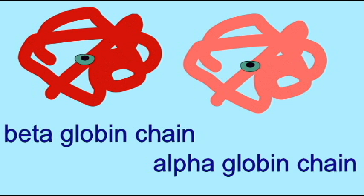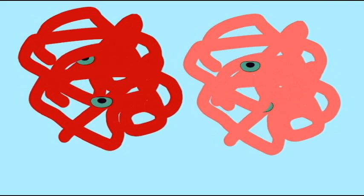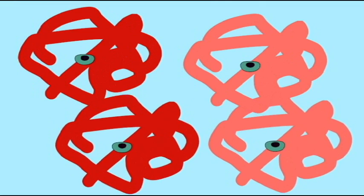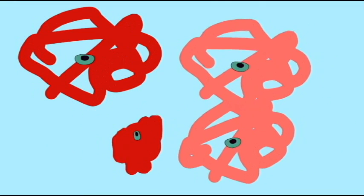An alpha globin chain is different from the beta globin chain. In red blood cells, a large complex is formed which contains two alpha globin chains and two beta globin chains.